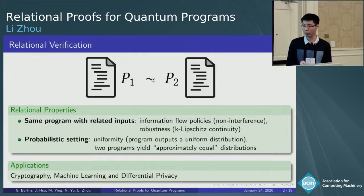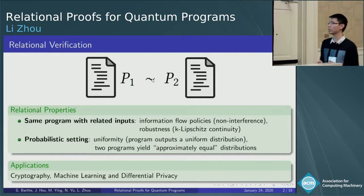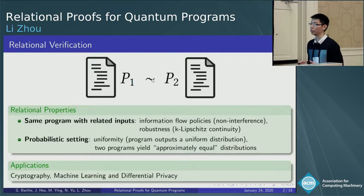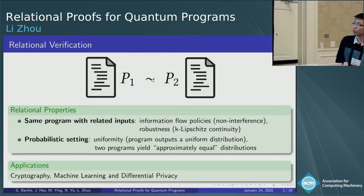...we may use it to verify the uniformity of a randomized program and the approximate equivalence between two programs. In application, relational verification has found success in many fields, including cryptography, machine learning, differential privacy, and so on.